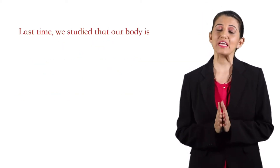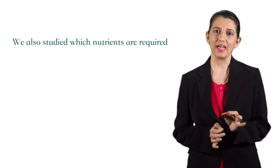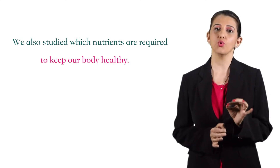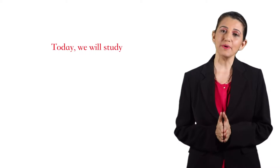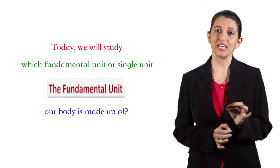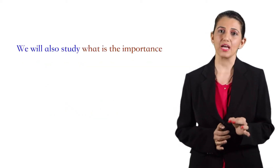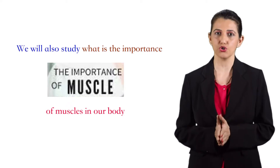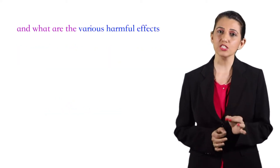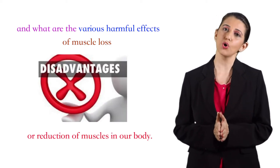Last time we studied that our body is made up of different kinds of elements. We also studied which nutrients are required to keep our body healthy. Today, we will study which fundamental unit or single unit our body is made up of. We will also study what is the importance of muscles in our body and what are the various harmful effects of muscle loss or reduction of muscles in our body.